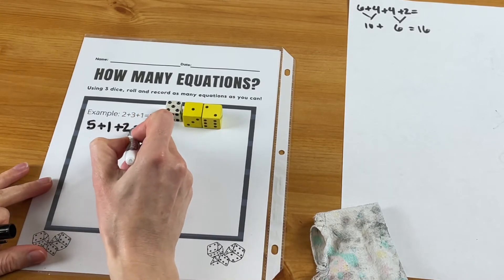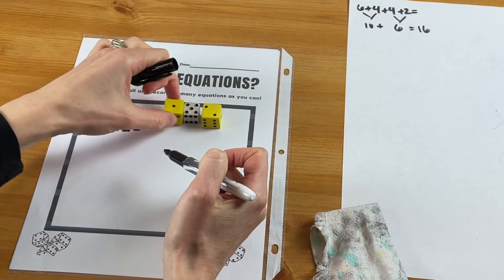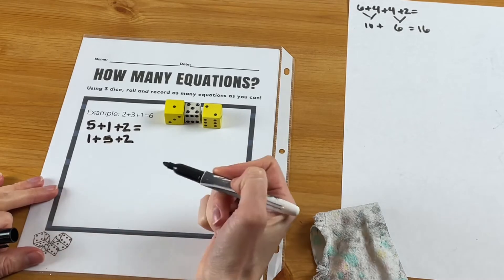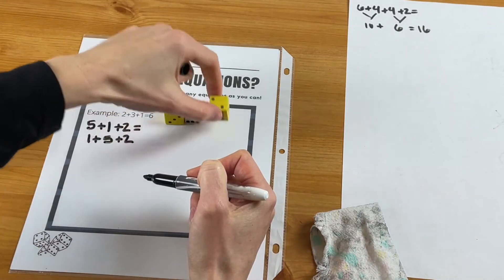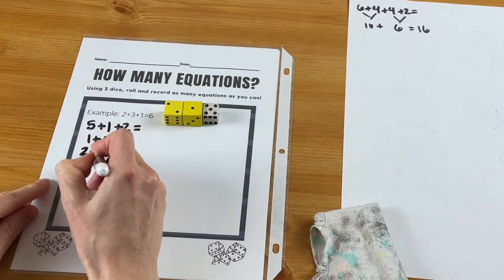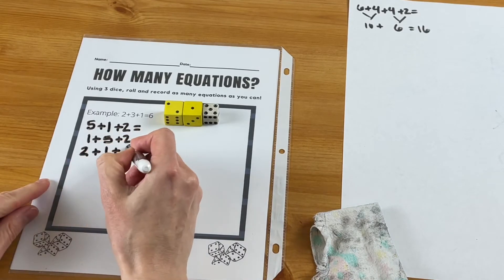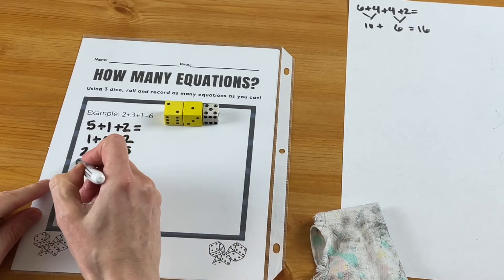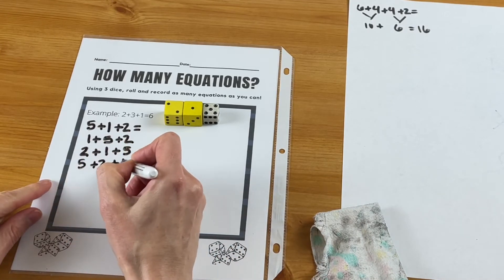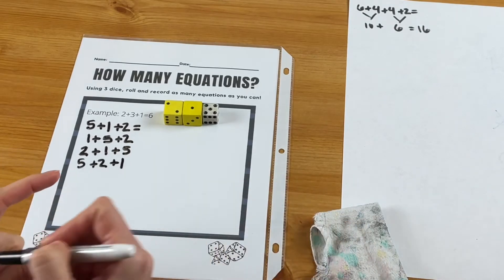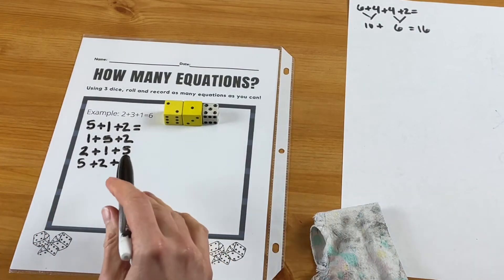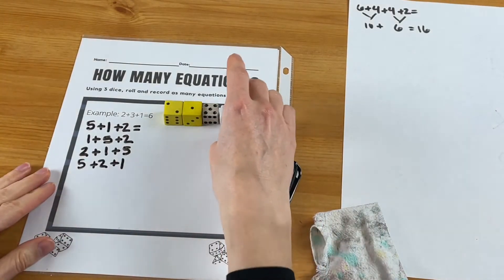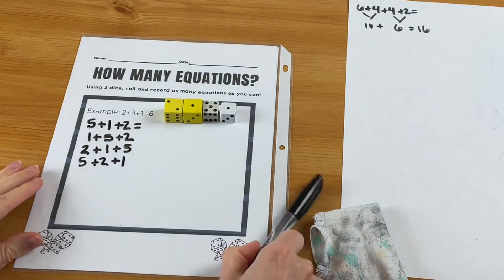Same idea - with those digits they will see how many equations they can come up with. So we can do it just as it is here: five and one and two. We could do one and five and two. We could do two and one and five. What have we not done? Five and two and one. So the idea is just to come up with as many as they can.